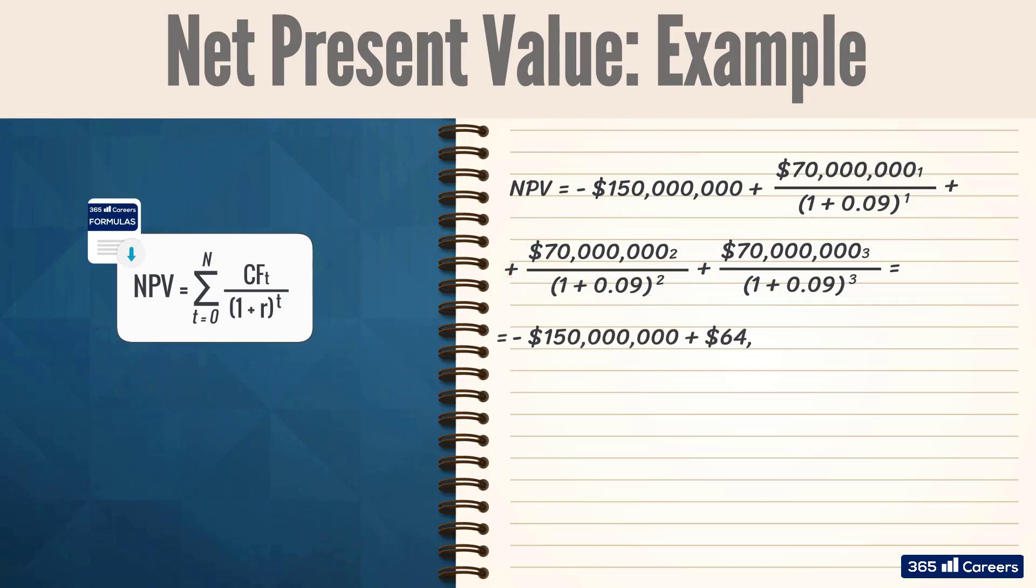In the end, we obtain a positive value of $27,190,627. Based on the NPV rule, Alpha Corporation can go ahead with the project, as it creates value.